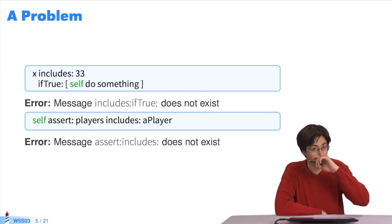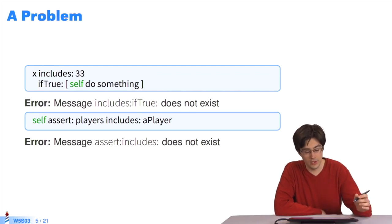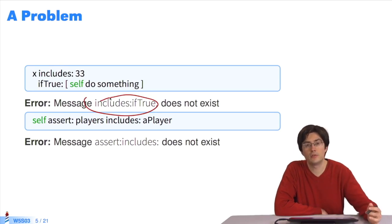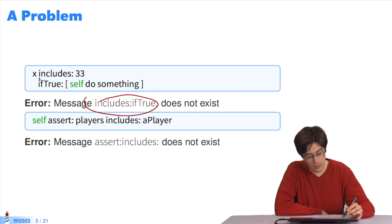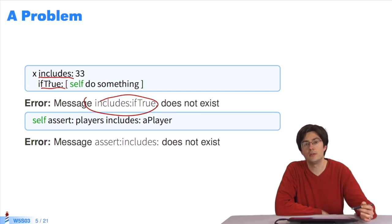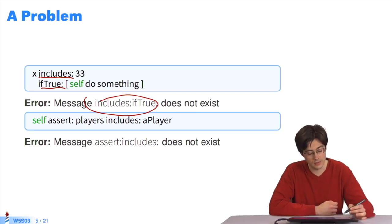Another problem we often see is messages that shouldn't theoretically be combined that are combined. So here we have an error saying that includes if true doesn't exist. Includes exists, if true exists. Includes if true doesn't. Looking closer, we realize that indeed, the message is being sent includes if true to receiver X with two parameters, 33 and a block. And that doesn't work. When Pharo sees a keyword, it tries to see all the subsequent keywords. It takes them all and considers it as one message.